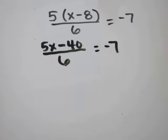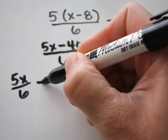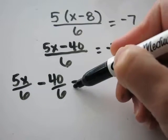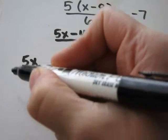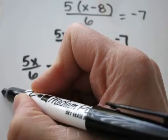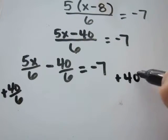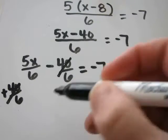Now I'm just going to rewrite the problem as 5x over 6 minus 40 over 6 equals negative 7. Now I'll want to add 40 over 6 to each side. That's going to cancel out.